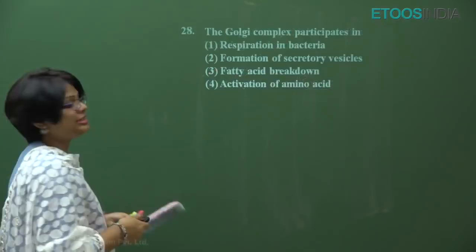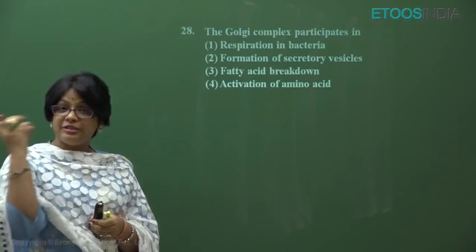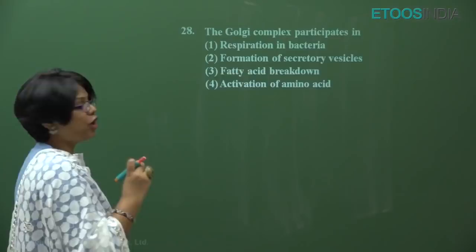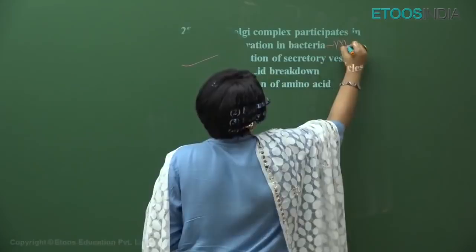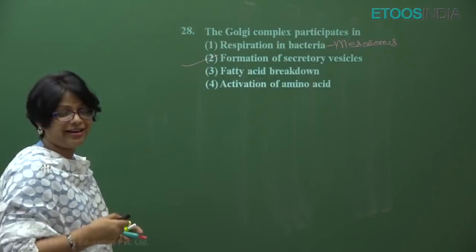Question number 28: the Golgi complex participates in — now, the Golgi complex is a membrane-bound organelle found close to the nucleus. Its main function is packaging of materials; vesicles are formed containing secretions, so it forms secretory vesicles. Respiration in bacteria is performed by mesosomes; fatty acid breakdown is a function of endoplasmic reticulum; and activation of amino acids is done by tRNA. The main function of Golgi complex is packaging or formation of secretory vesicles.